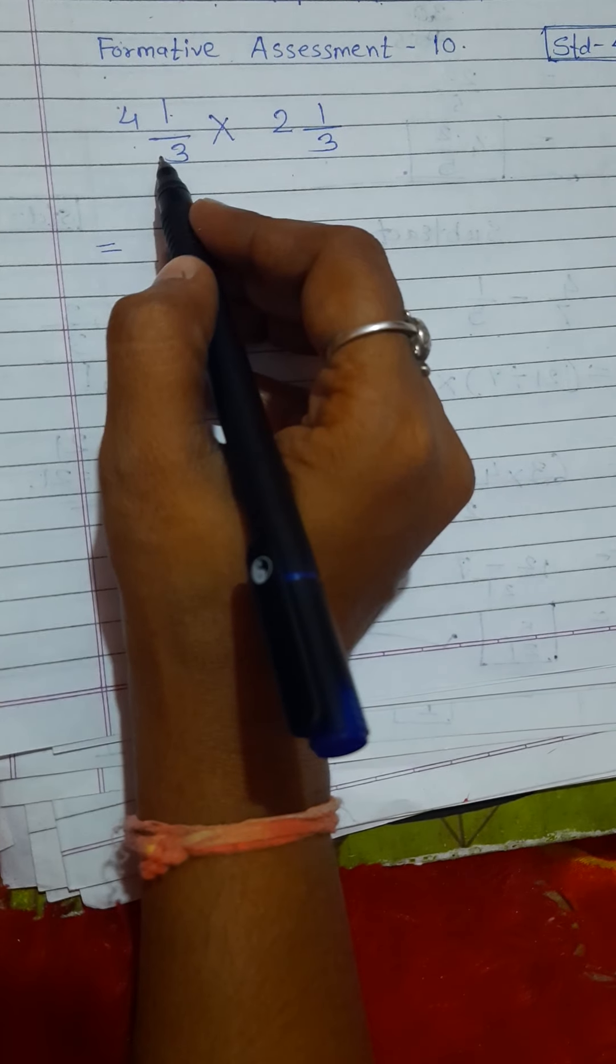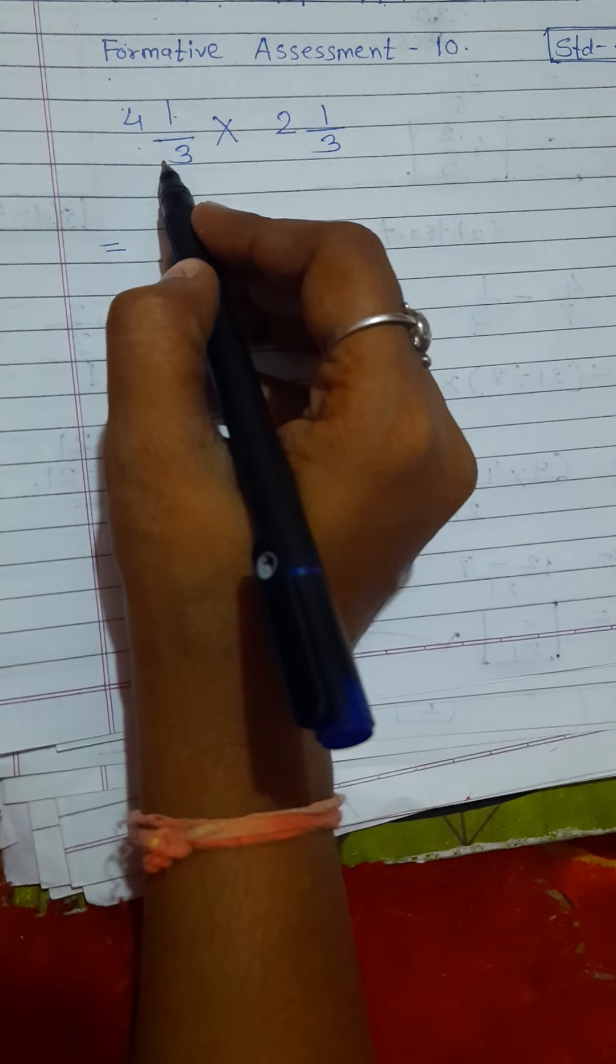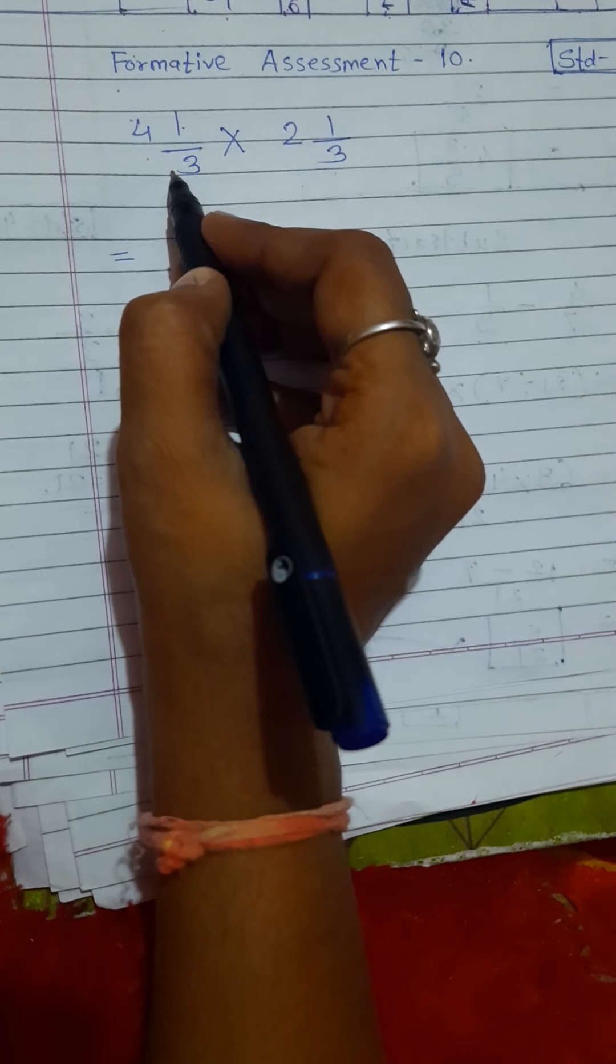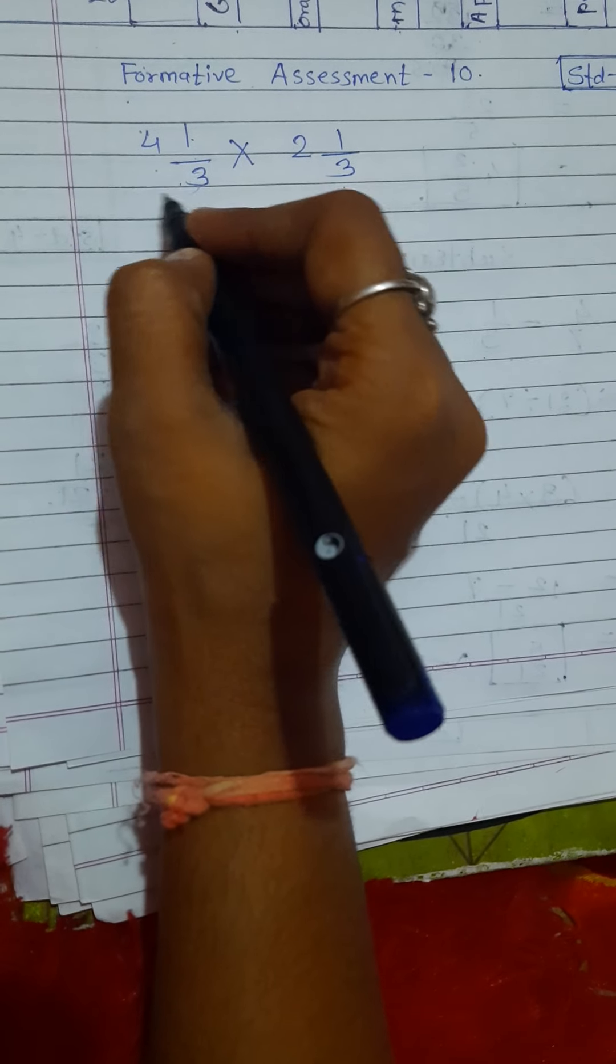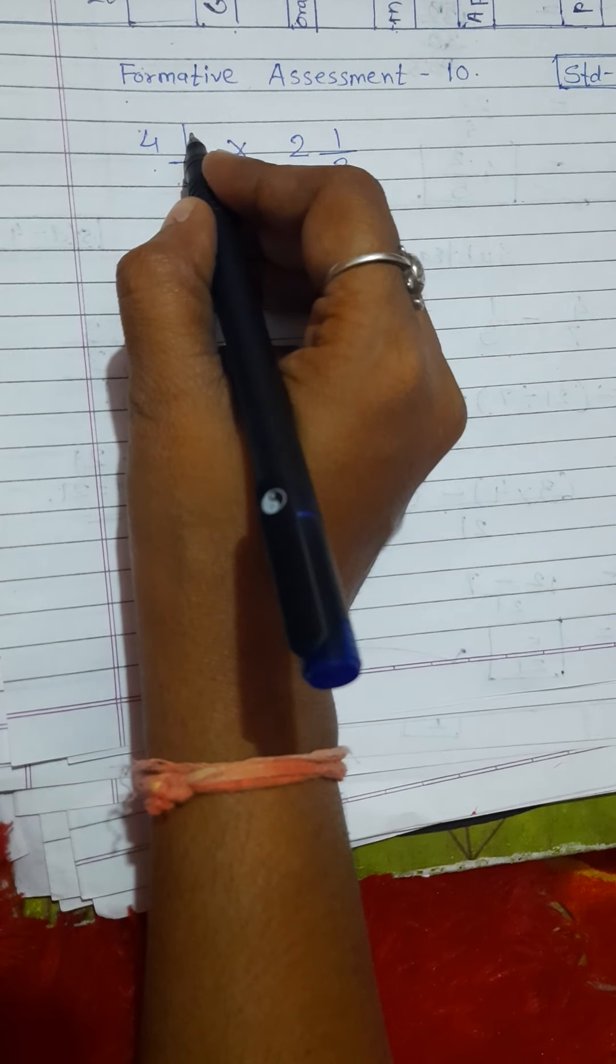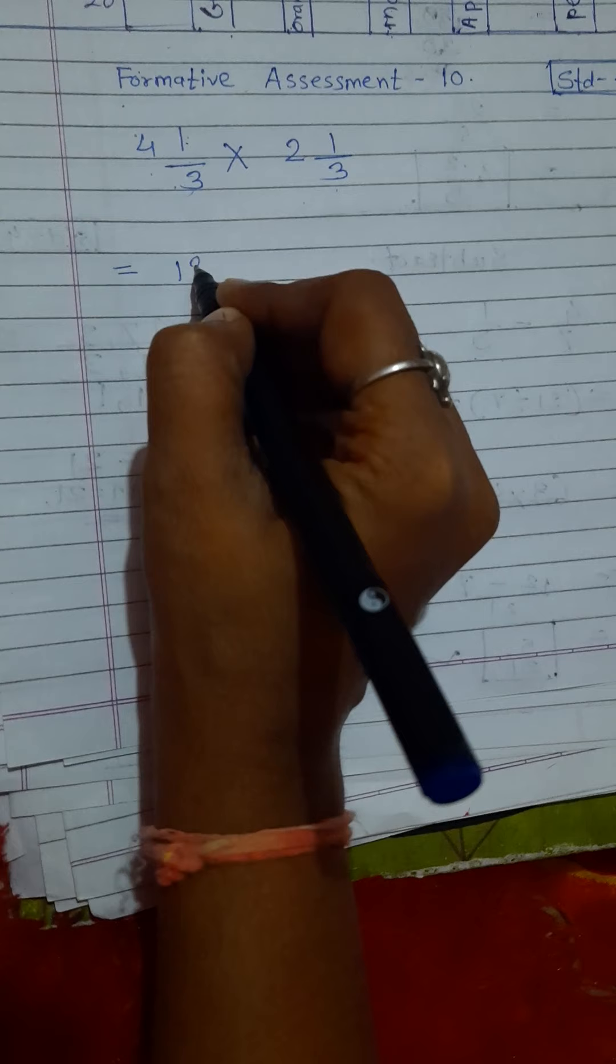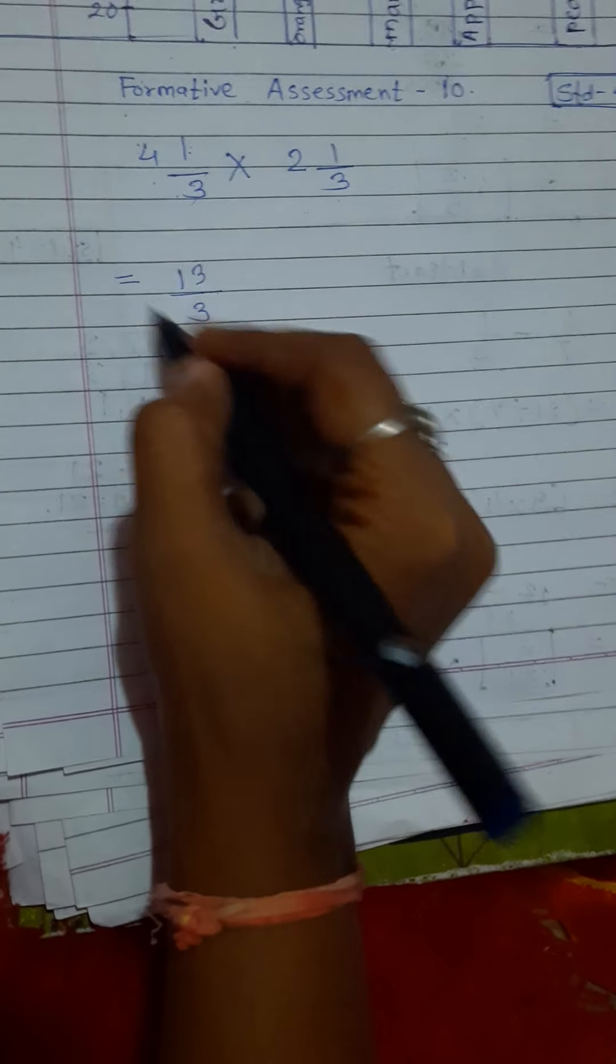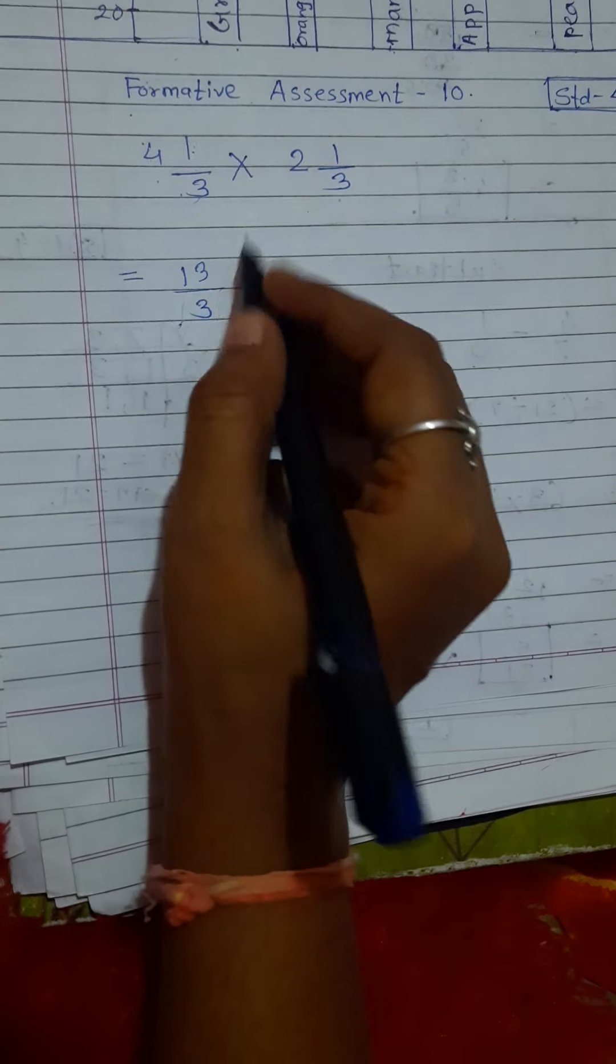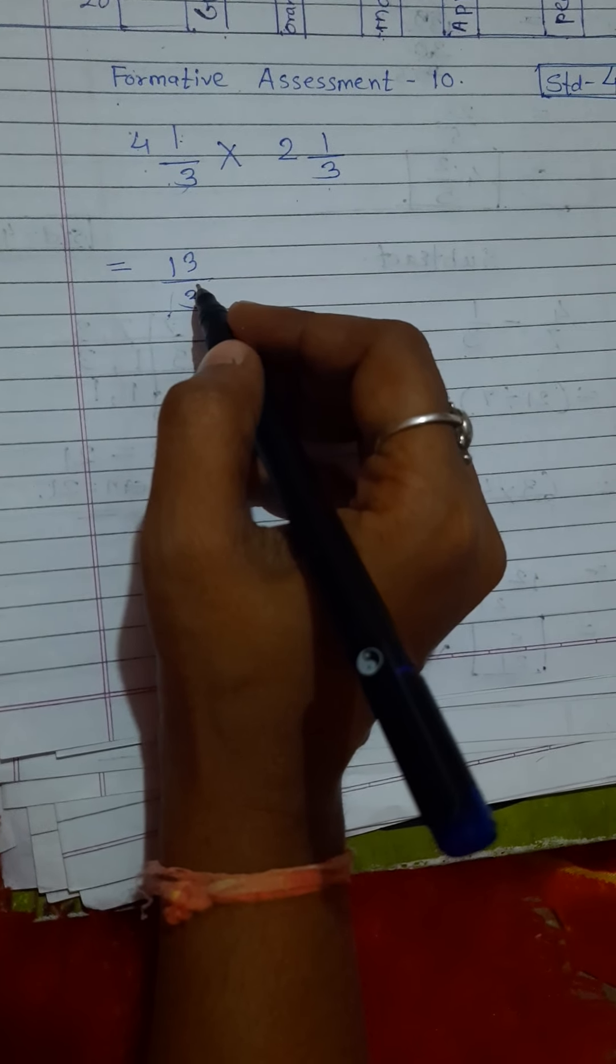First, we take that first mixed fraction and convert it to improper fraction. How? 3 × 4 is 12, 12 + 1 is 13, so 13/3. That is the improper fraction. We know that. In last period we already learned all that methods.